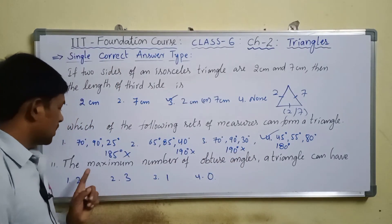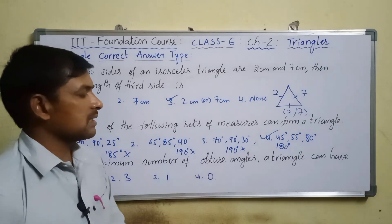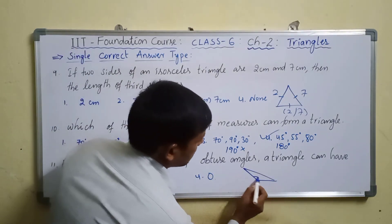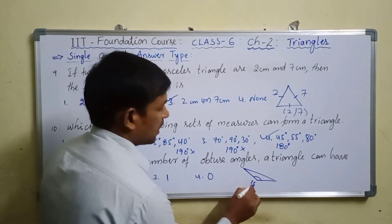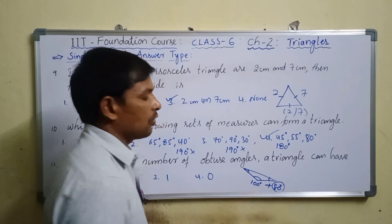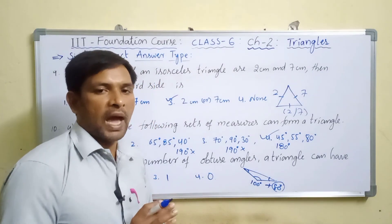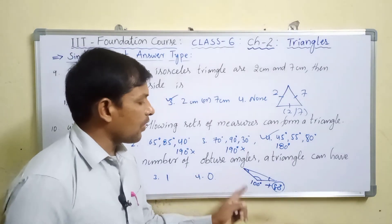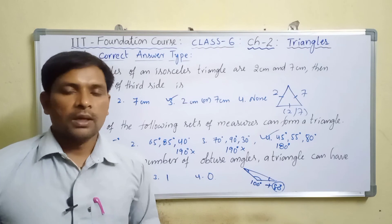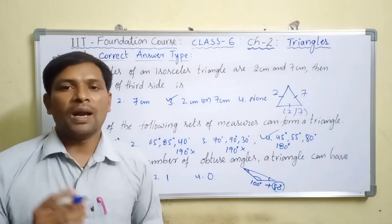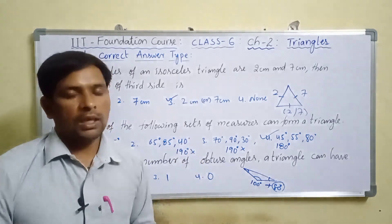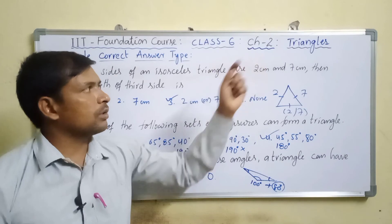Question number eleven: the maximum number of obtuse angles a triangle can have. An obtuse angle is more than 90 degrees. If one angle is 100 degrees, the remaining two angles must sum to 80 degrees. So only one obtuse angle can exist in a triangle. This concludes the single correct answer type session. The next video will cover multi-correct, comprehensive, and matrix match type questions.